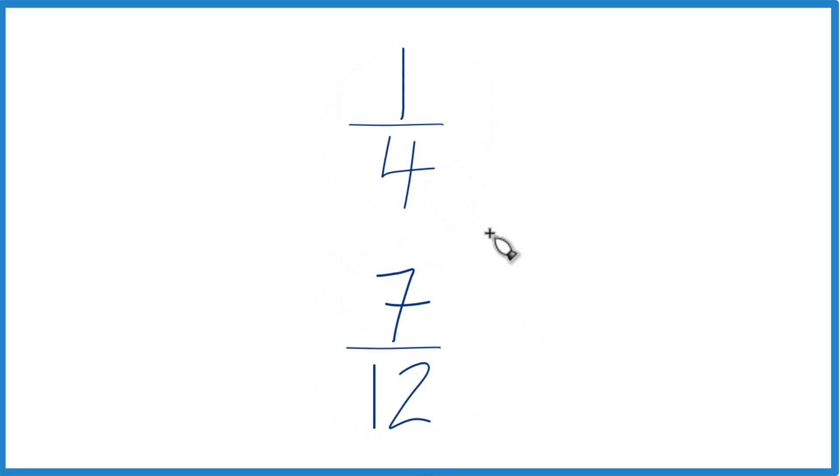And you may be able to reason this one out. We could just take a calculator, divide 1 by 4, get a decimal, 7 by 12, get a decimal, compare the decimals, figure out if 1/4 is greater than or less than 7/12.